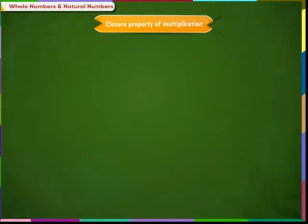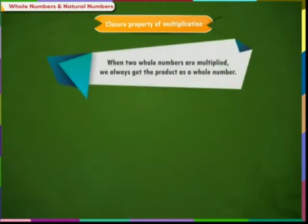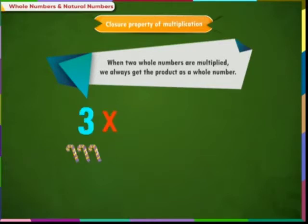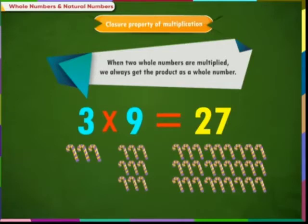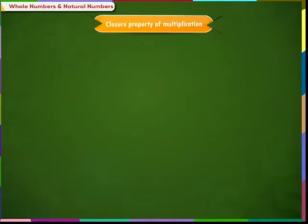Now closure property of multiplication. When 2 whole numbers are multiplied we always get the product as a whole number. For example, if we multiply 3 with 9 then we get 27, which is also a whole number.